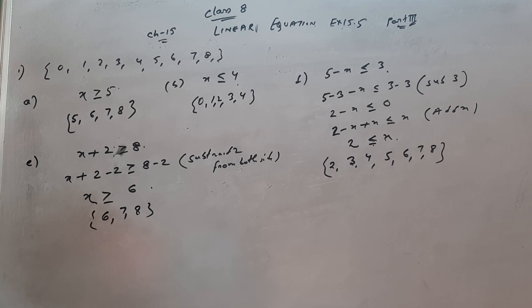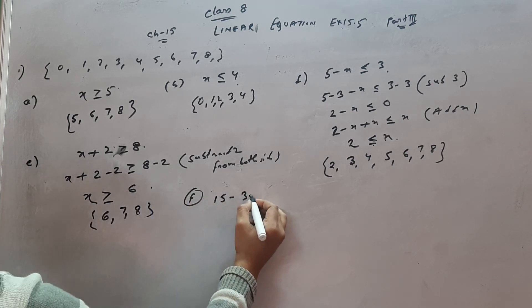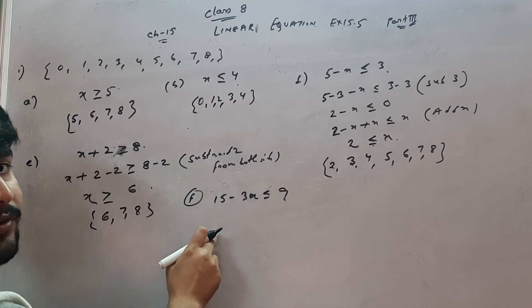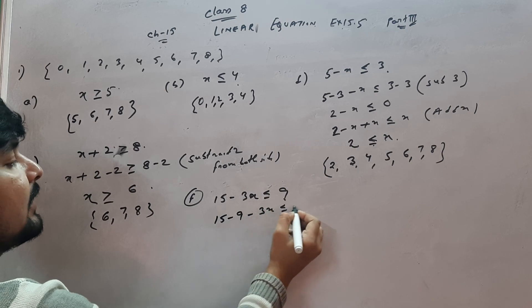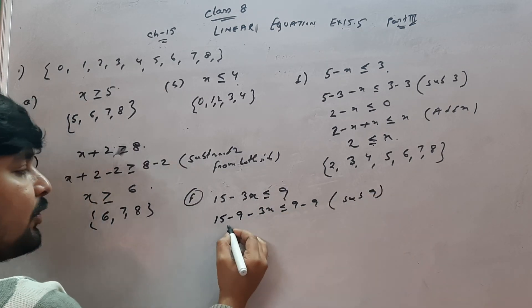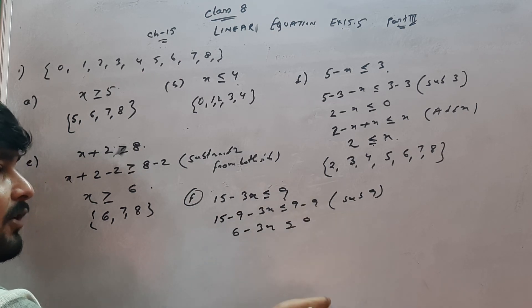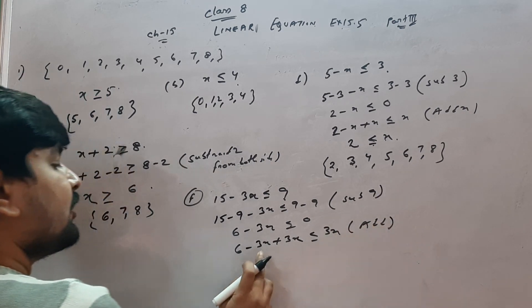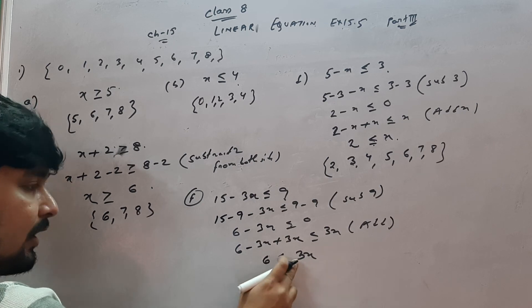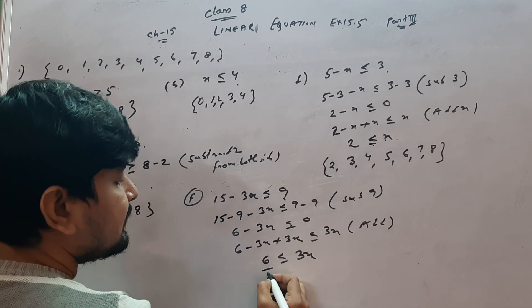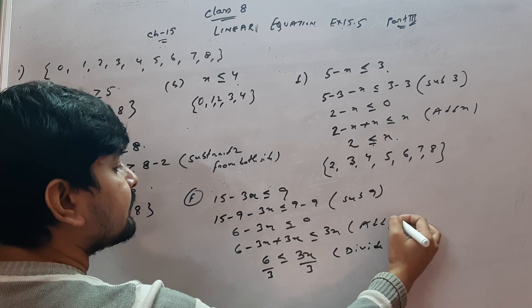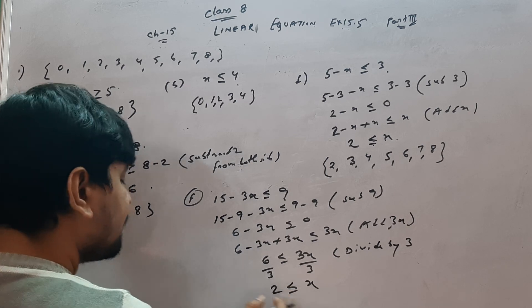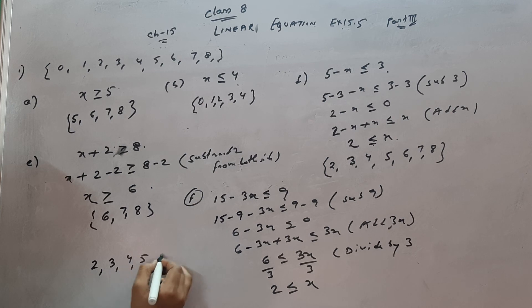For question (f): 15 minus 3x ≤ 9. Subtract 9 from both sides: 15 minus 9 minus 3x ≤ 0, giving 6 minus 3x ≤ 0. Add 3x to both sides: 6 ≤ 3x. Divide both sides by 3: 2 ≤ x, meaning x is greater than or equal to 2. So the solution set is {2, 3, 4, 5, 6, 7, 8}.